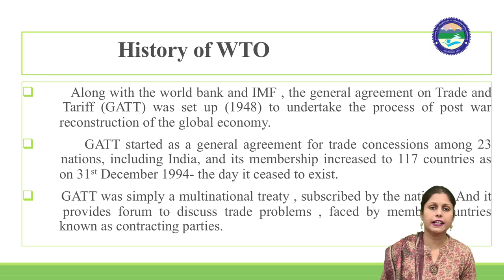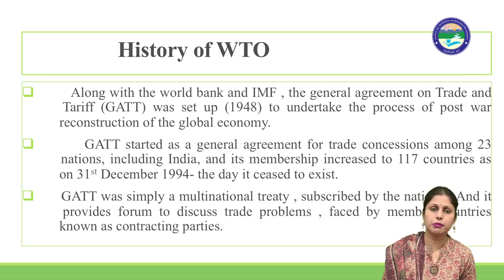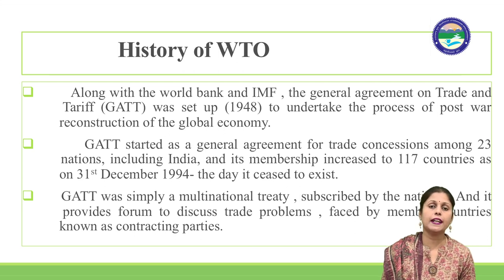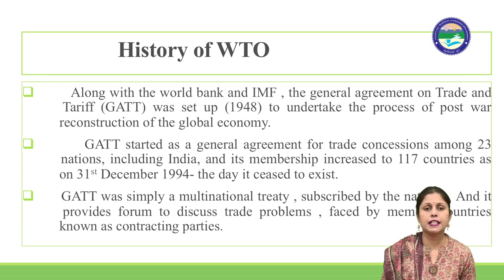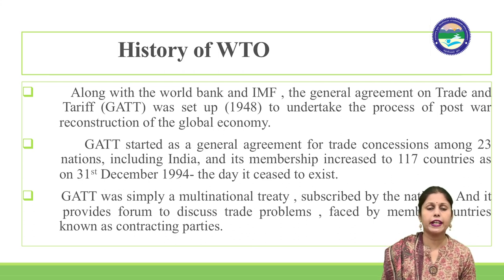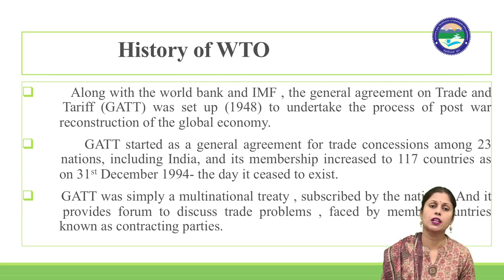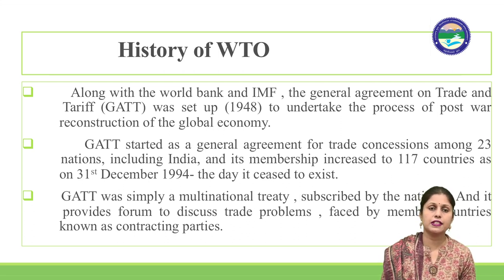GATT was a legal agreement between countries to promote international trade by reducing or eliminating trade barriers. The main principle of GATT was that no member countries should discriminate between countries when conducting international trade. When GATT came into existence in 1948, there were 23 countries.